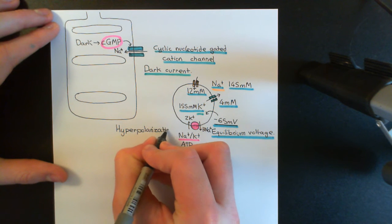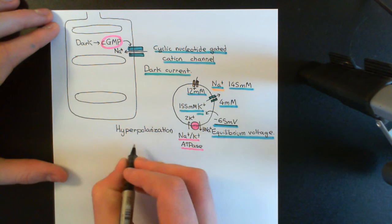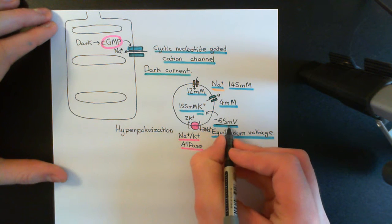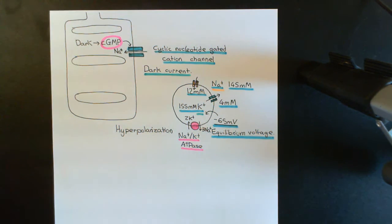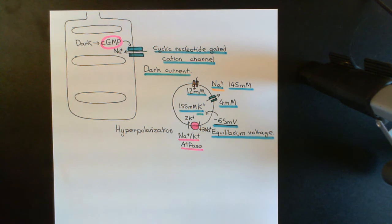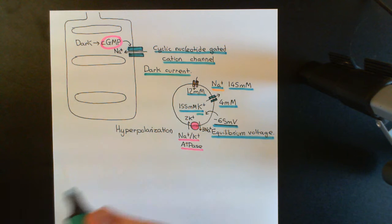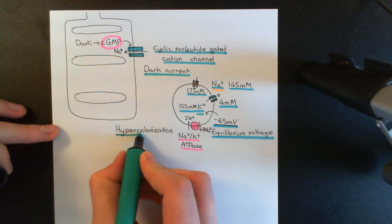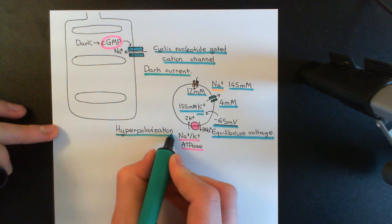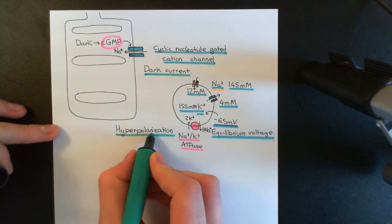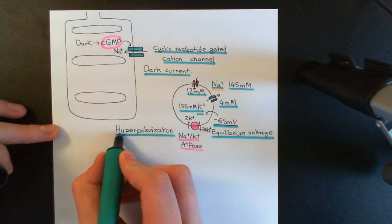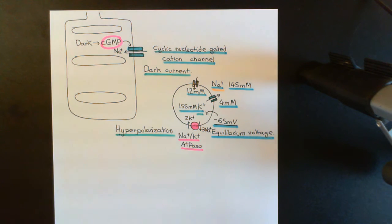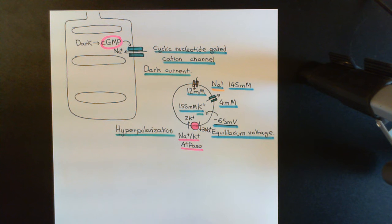Hyperpolarisation means that the electrical potential difference across the cell membrane will become more negative. To summarise then, the phototransduction process — the process whereby visual stimuli, photons, can lead to an electrical signal being generated by the photoreceptor.